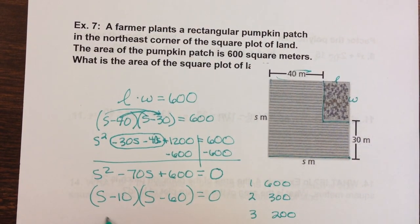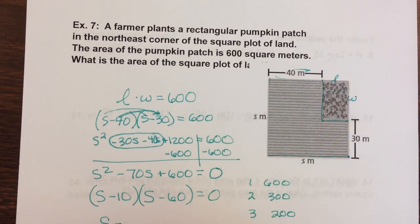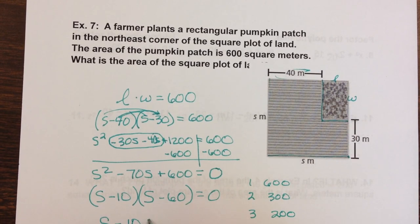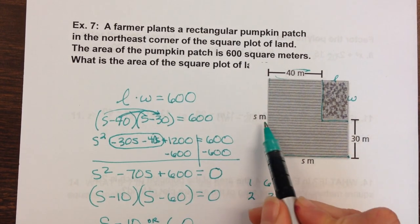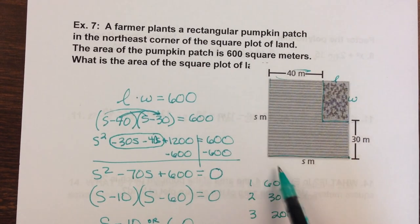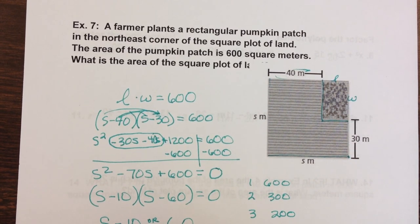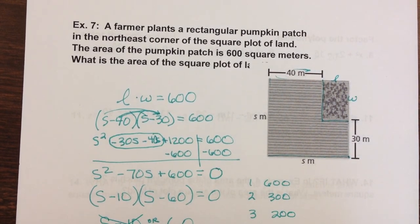That means that s, or the length of this, could equal 10 for this factor, or it could equal 60. So I want to look at which one of those would make the most sense. It has to be something that I could subtract 40 from. So it's got to be bigger than 40. It's got to be bigger than 30. So I see that s must equal 60. This one wouldn't make sense.